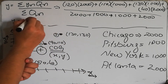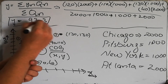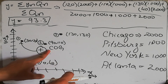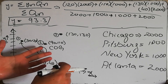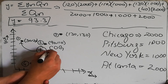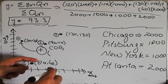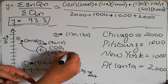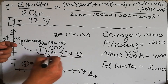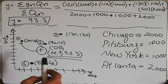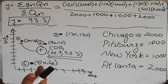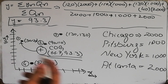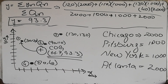After solving, the y coordinate comes out to 93.3. So the x and y coordinates of the center of gravity are (66.7, 93.3). This is the location where, if we install our warehouse or industry, we will have the minimum cost of distribution to all four markets.